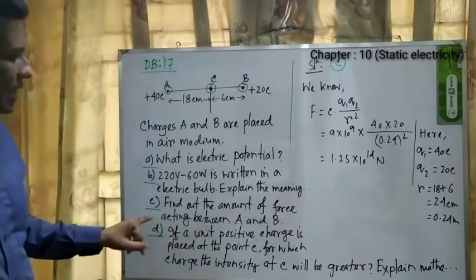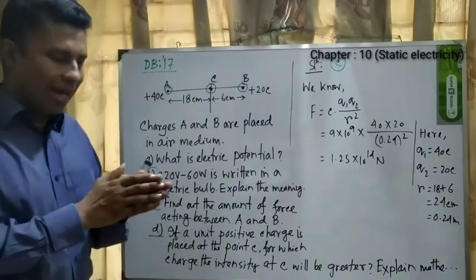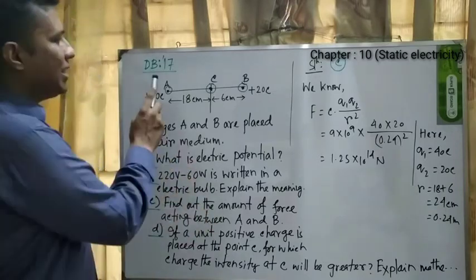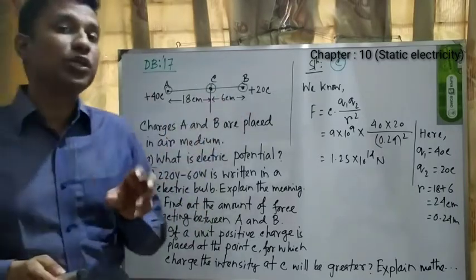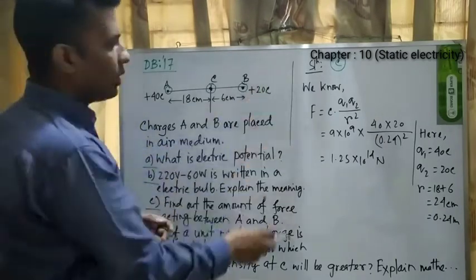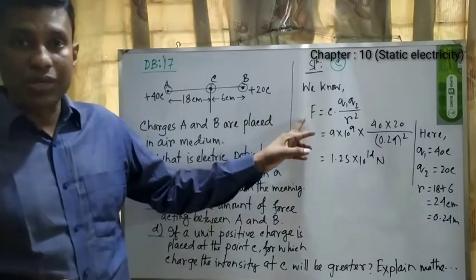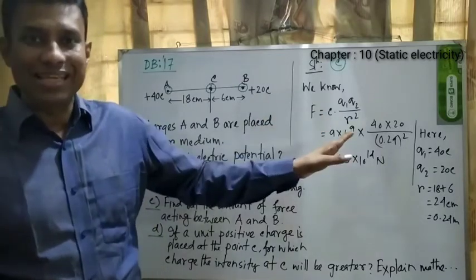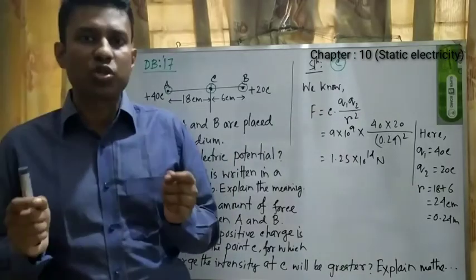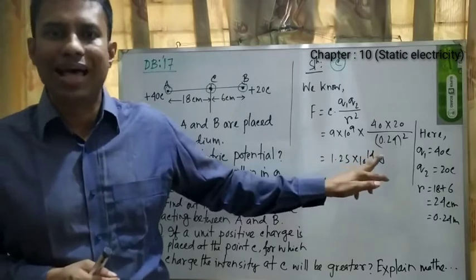The third question: find out the amount of force acting between A and B — the attractive or repulsive force. We use Coulomb's law equation: F = k × q1 × q2 / r². Here k is the Coulomb's constant with value 9 × 10⁹.